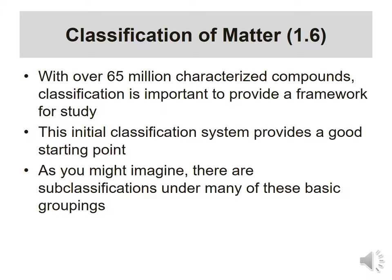It turns out there are over 18 million characterized compounds in the world, which means there are a whole bunch more we just don't know yet — and there's probably virtually an infinite number we could have. The classification system is important for us; we need some sort of a framework to study. Scientists like to get everything in order so we can talk about it. This initial classification system provides a good starting point, though it's not entirely complete.